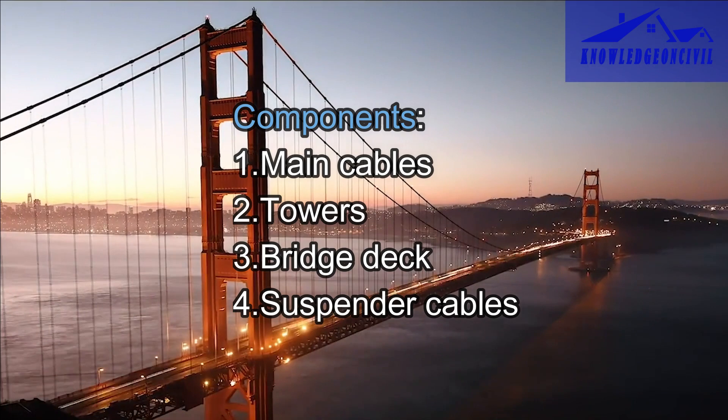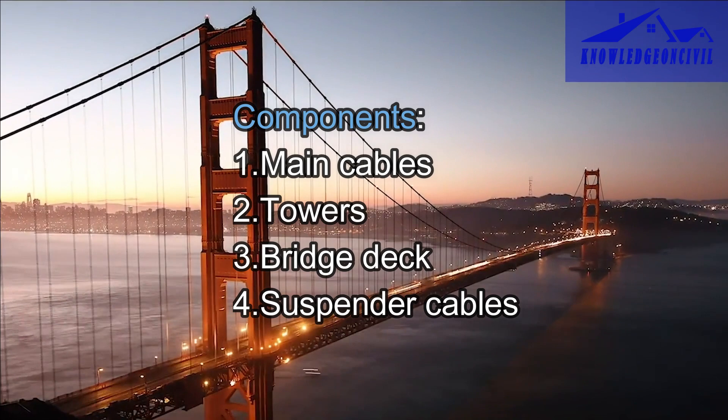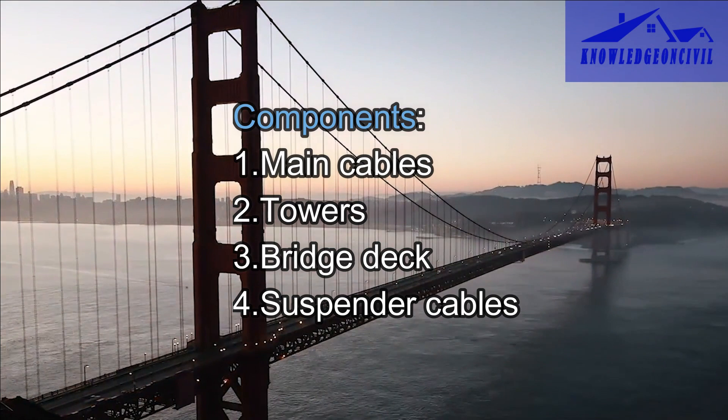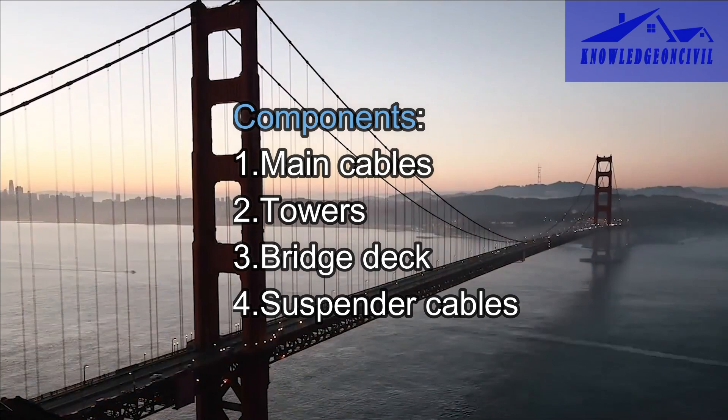The bridge deck is suspended from the main cables and carries vehicles, pedestrians, or other loads. It can have various designs and materials, including steel, concrete, or composite materials. Suspender cables, also called hangers, connect the main cables to the bridge deck — they are evenly spaced along the length of the main cables and help distribute the load.